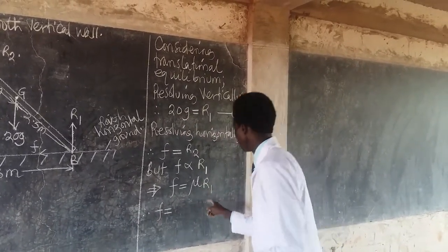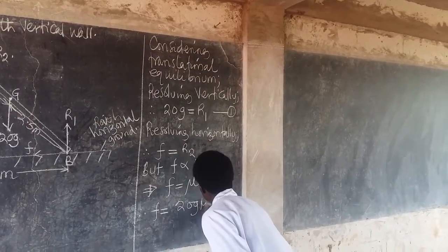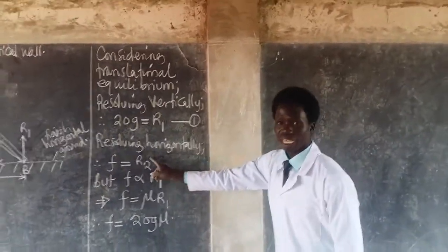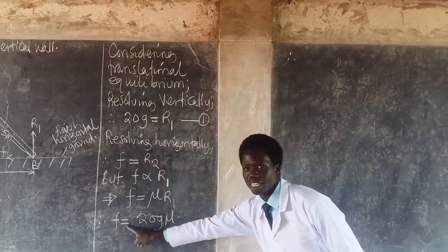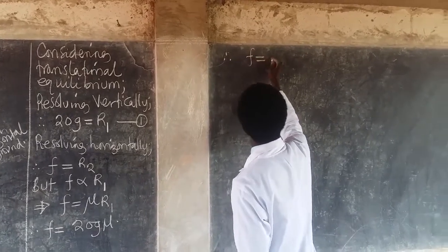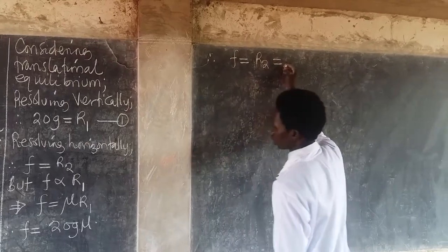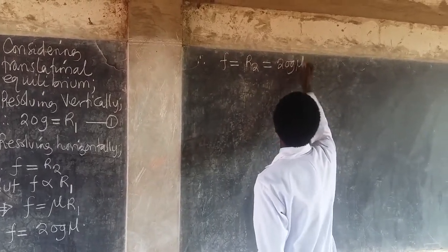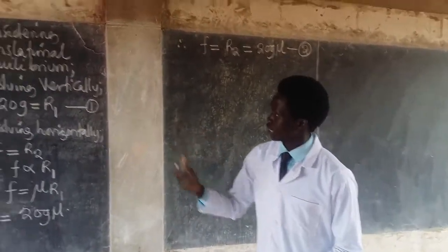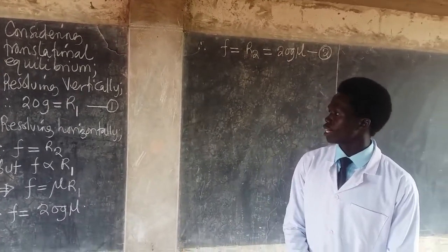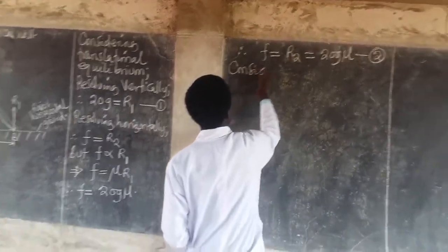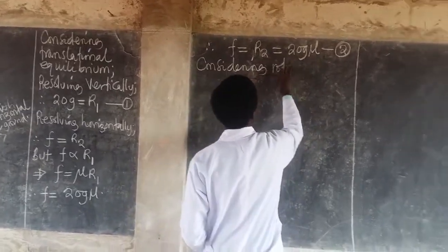Since R1 equals 20G, we substitute to get F equals 20G mu. Therefore F equals R2 equals 20G mu, and we call this equation 2. We are done with the translational equilibrium and will now move on to consider rotational equilibrium.